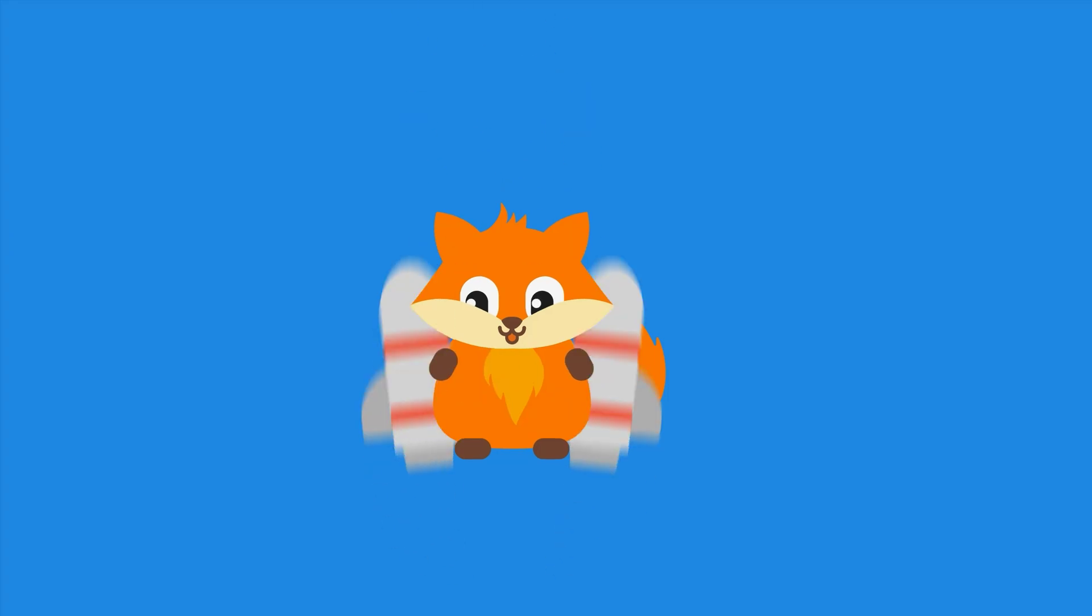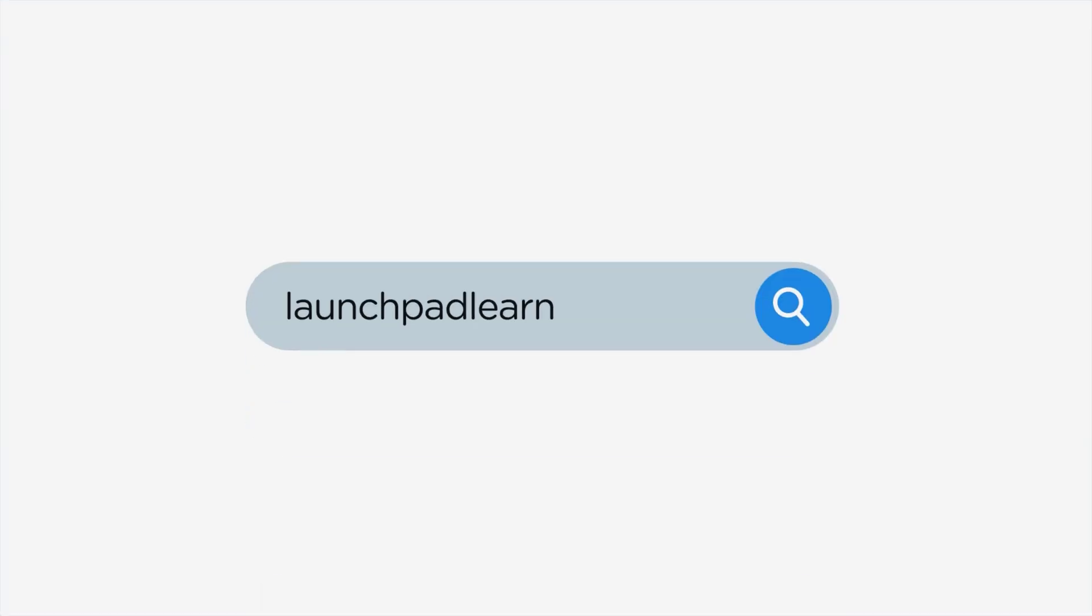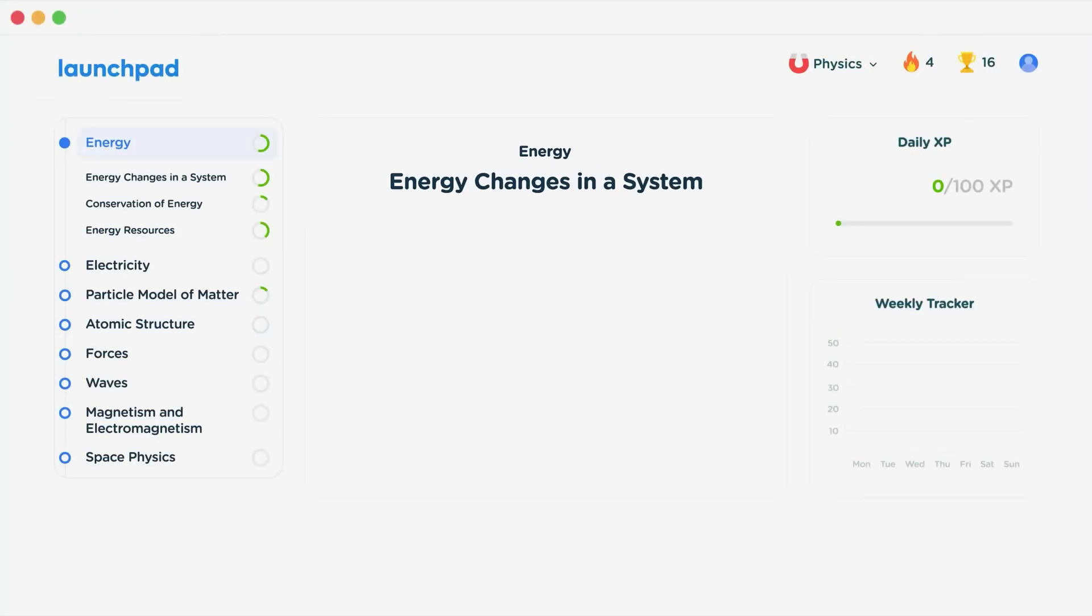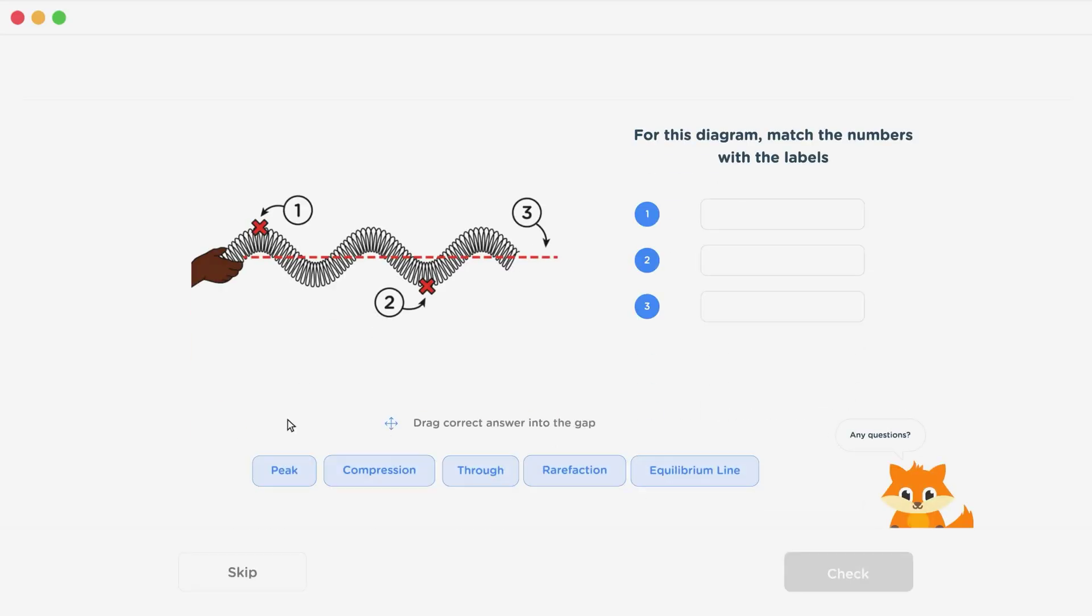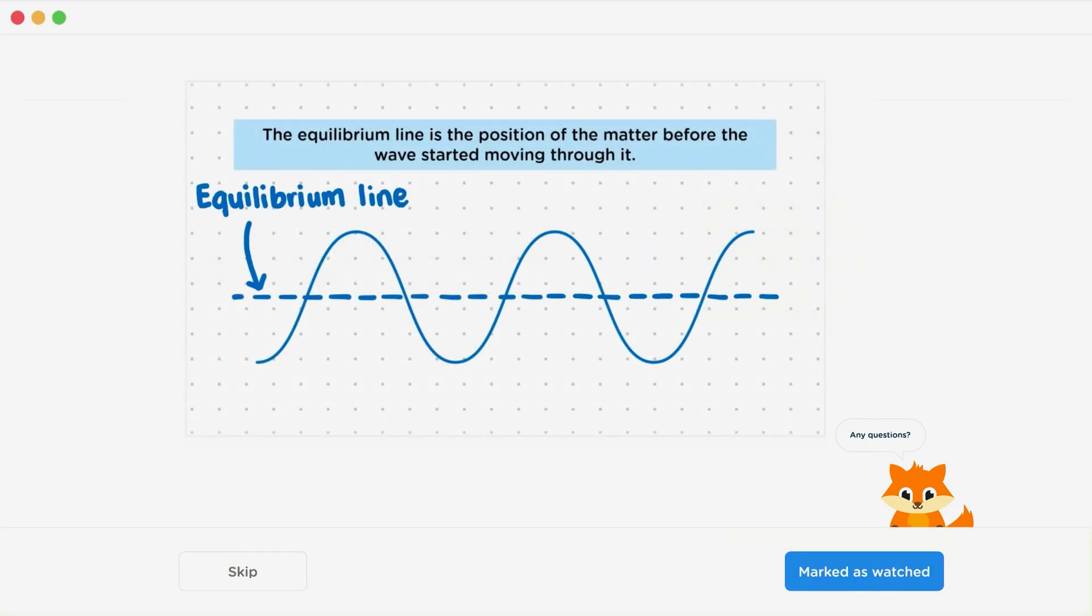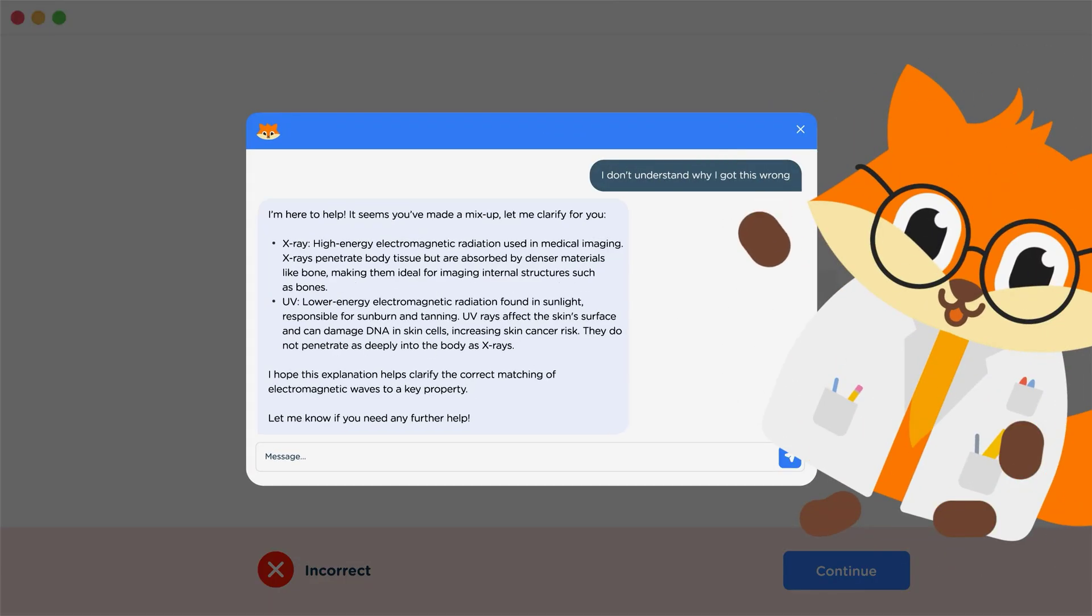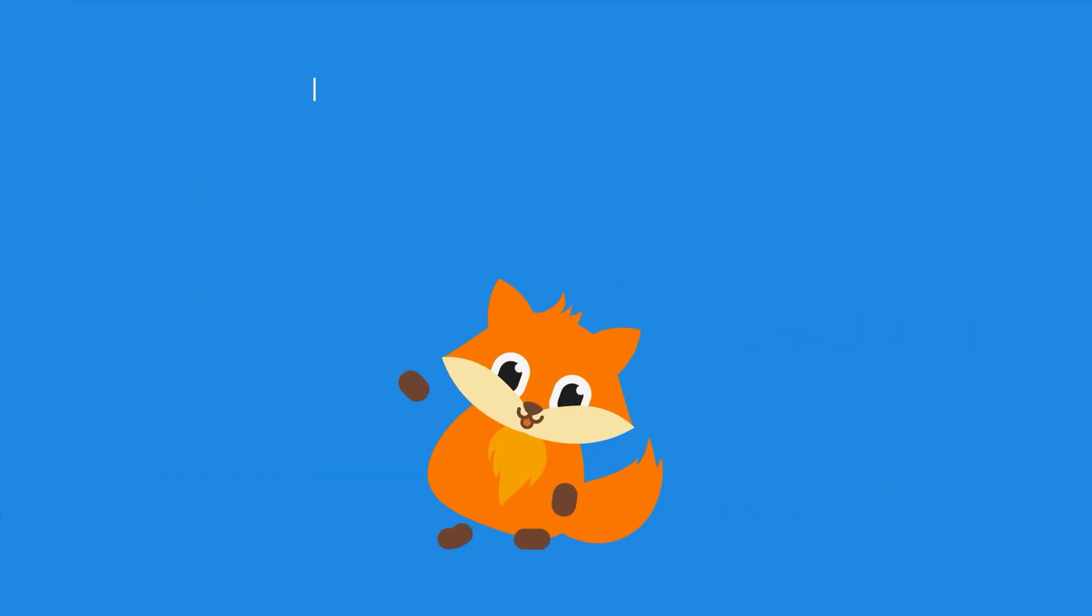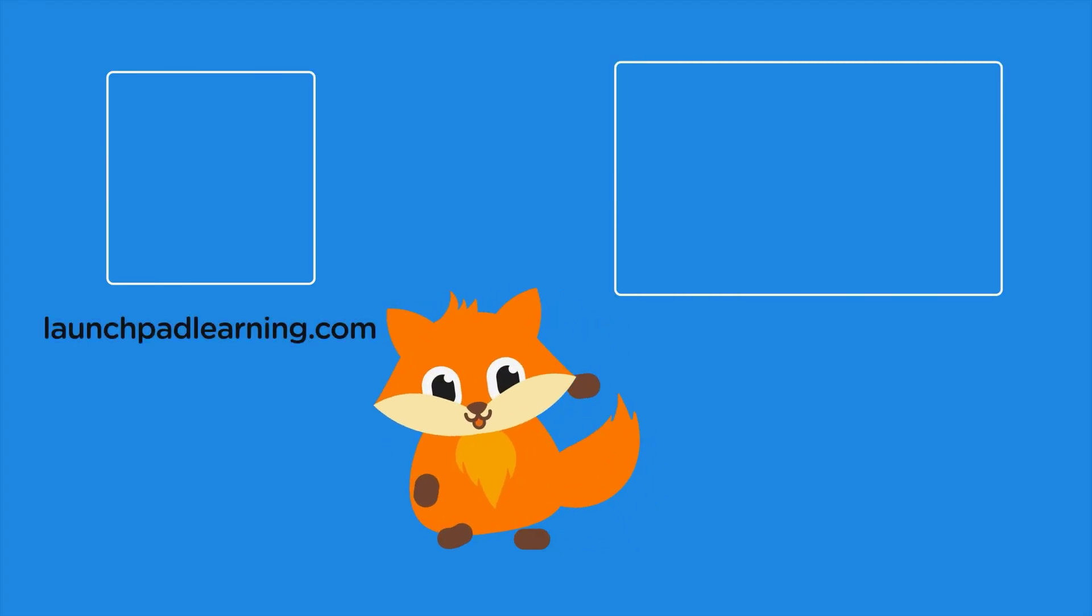If you want to take your GCSE revision to the next level, head over to launchpadlearning.com and check out our smart learning platform that's been designed to get you top results in your exams. We cover your whole specification and make revision fun with interactive quizzes, easy-to-follow videos, and more. You'll be kept motivated by your own AI tutor who's here to support you every step of the way. To check it out for yourself, click here, or click here to keep watching a selection of the videos from our full GCSE physics course. See you there!